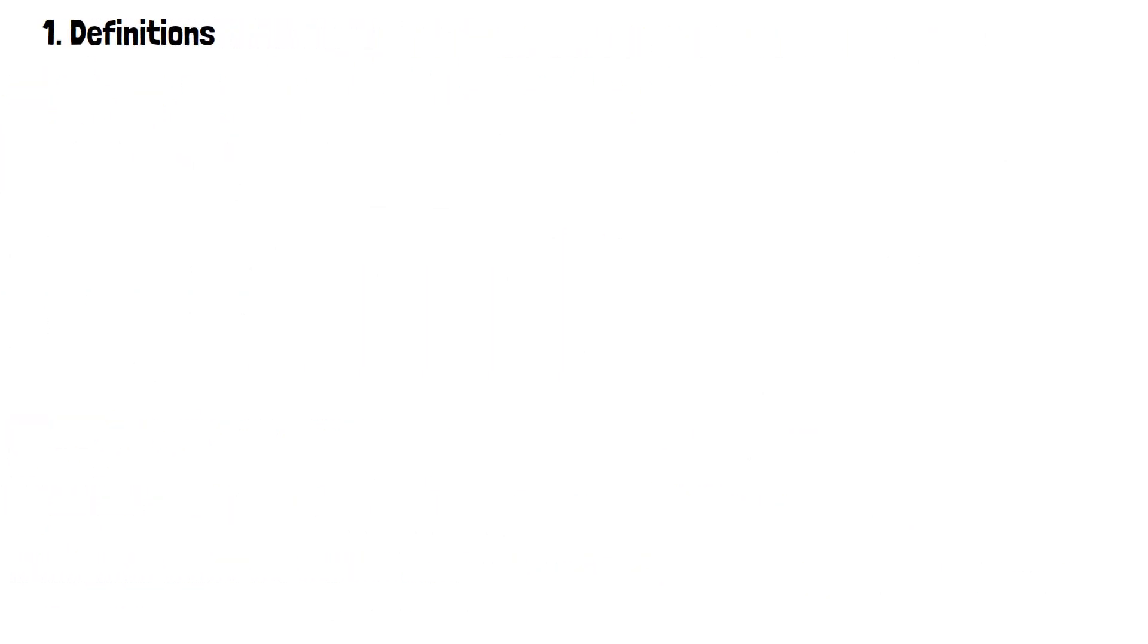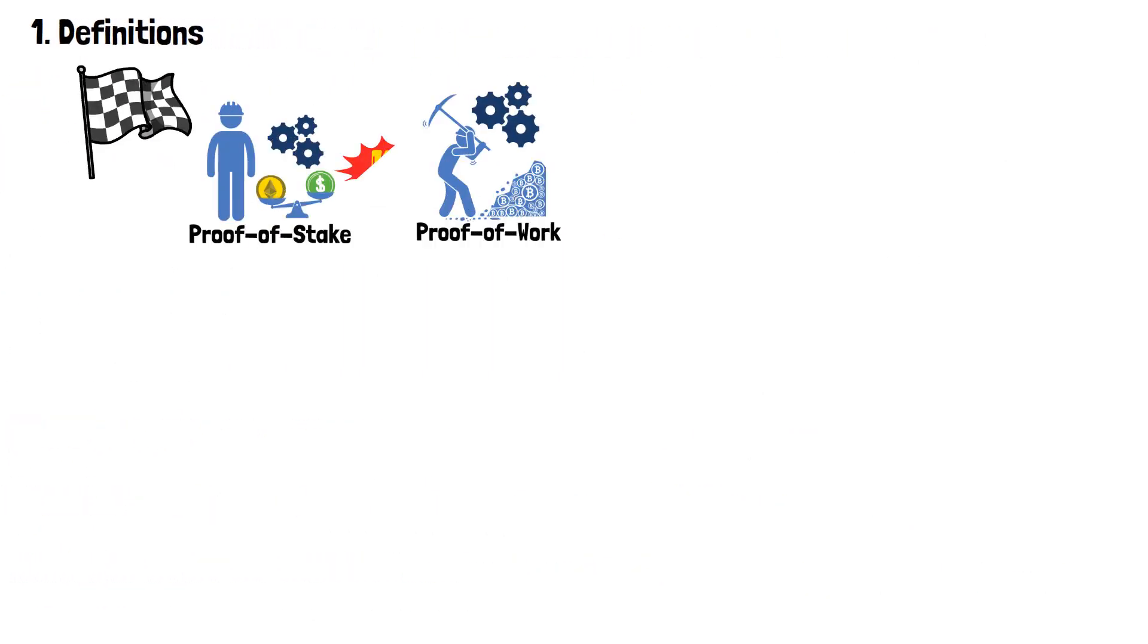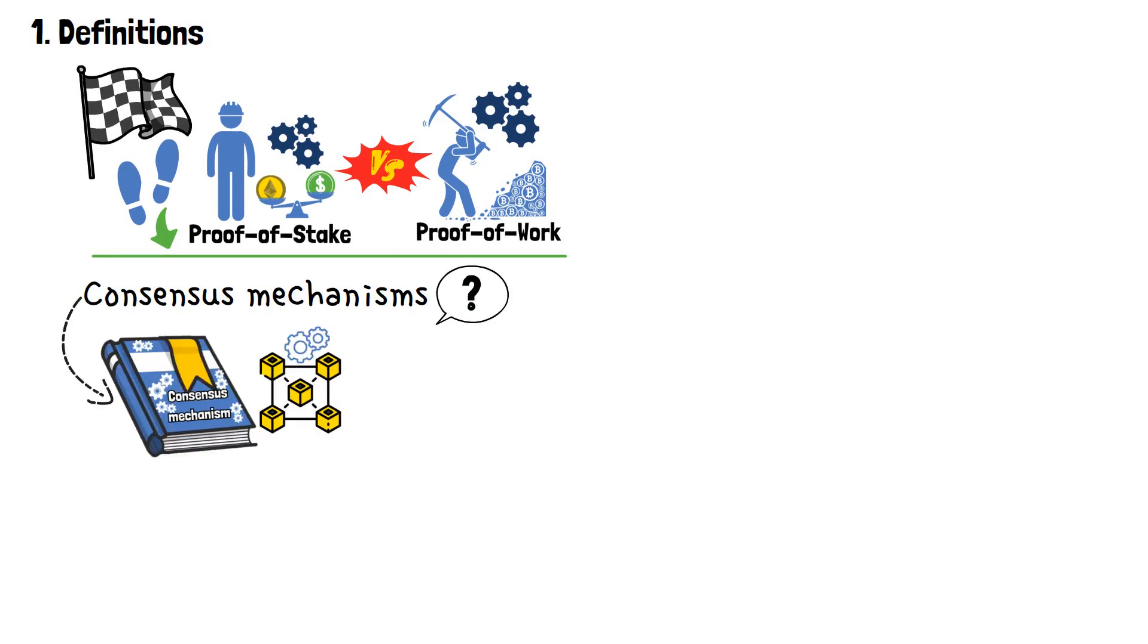Let's get to it! In order to begin understanding what is proof-of-stake versus proof-of-work, we need to take a step back and understand this. Both proof-of-stake and proof-of-work are consensus mechanisms. So, what's that?